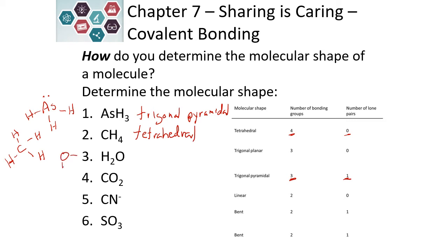Water is oxygen bonded to two hydrogen with two lone pairs, and so this is a bent structure. See if you can complete and determine the shape of the last three molecules. Pause the video and determine their shape.